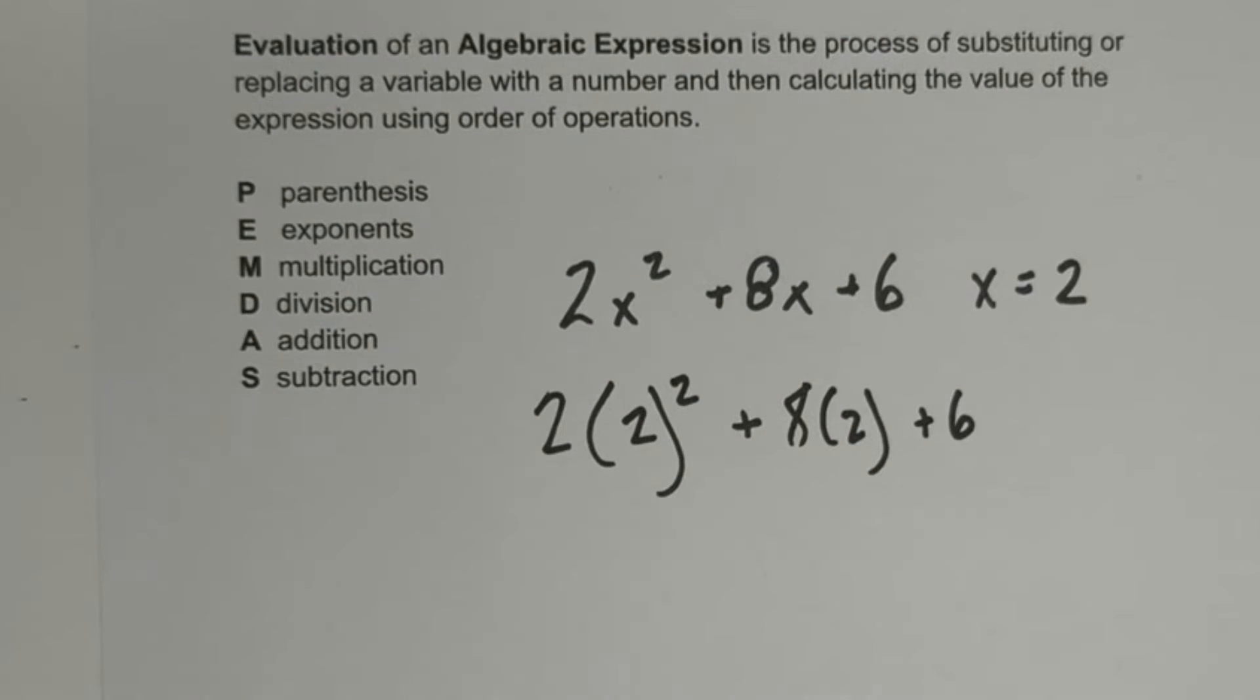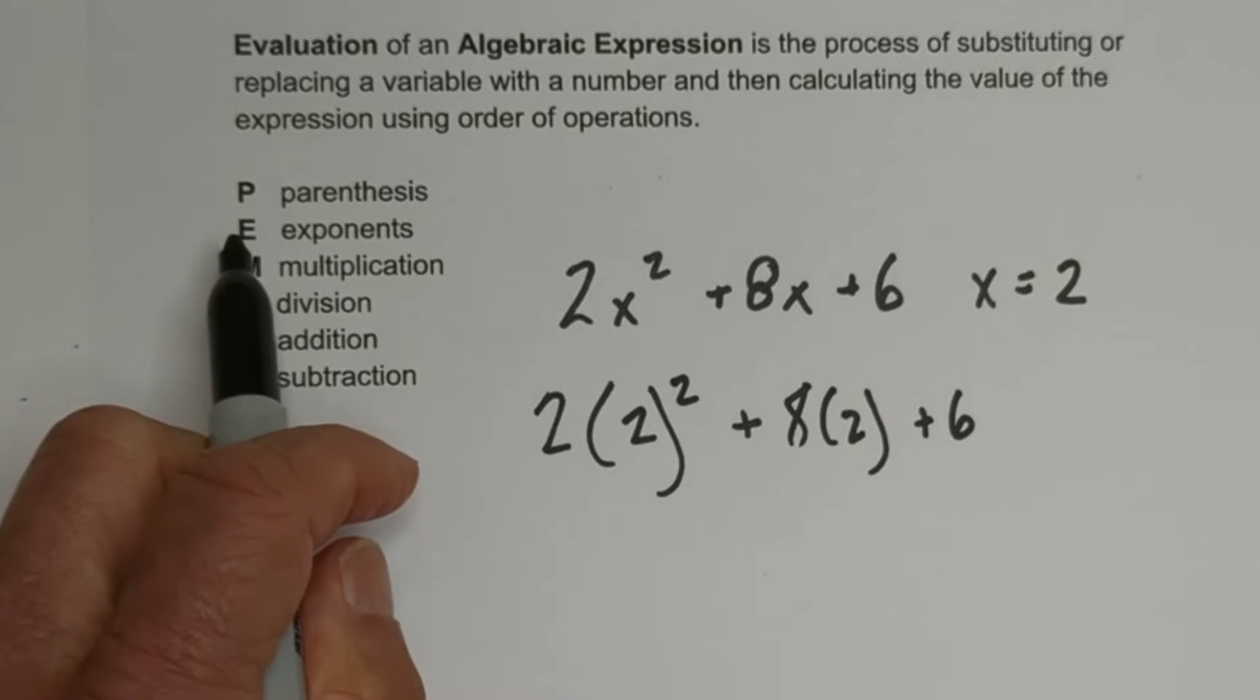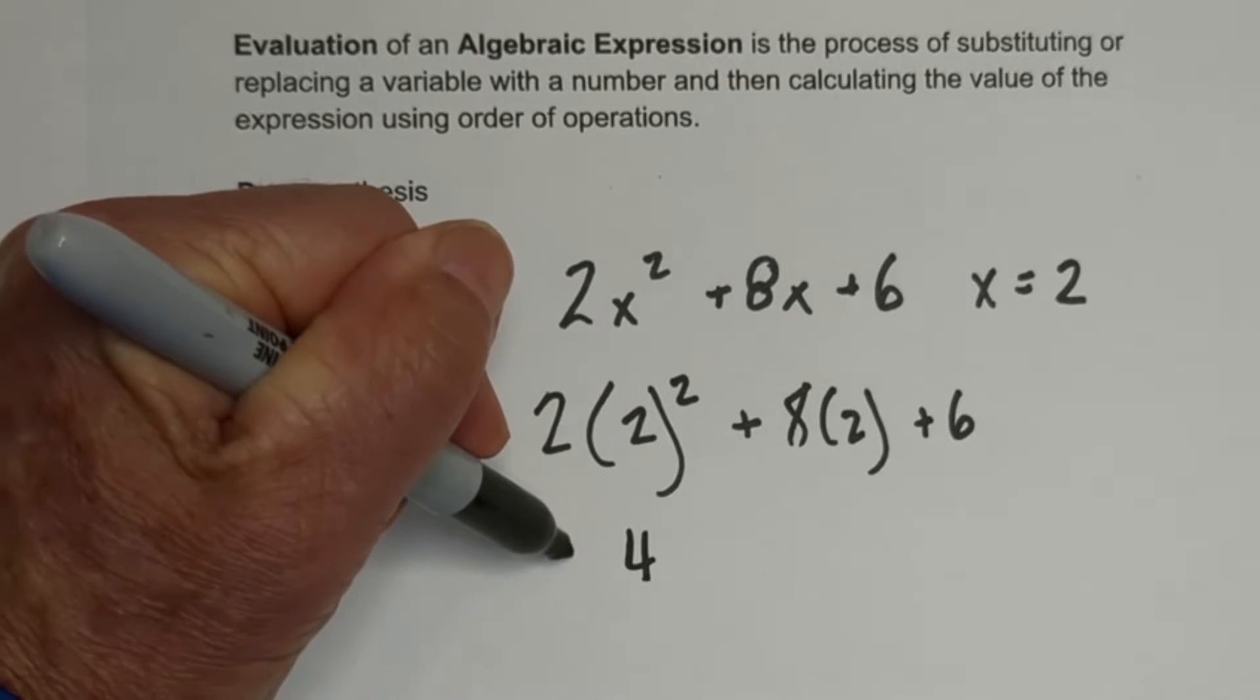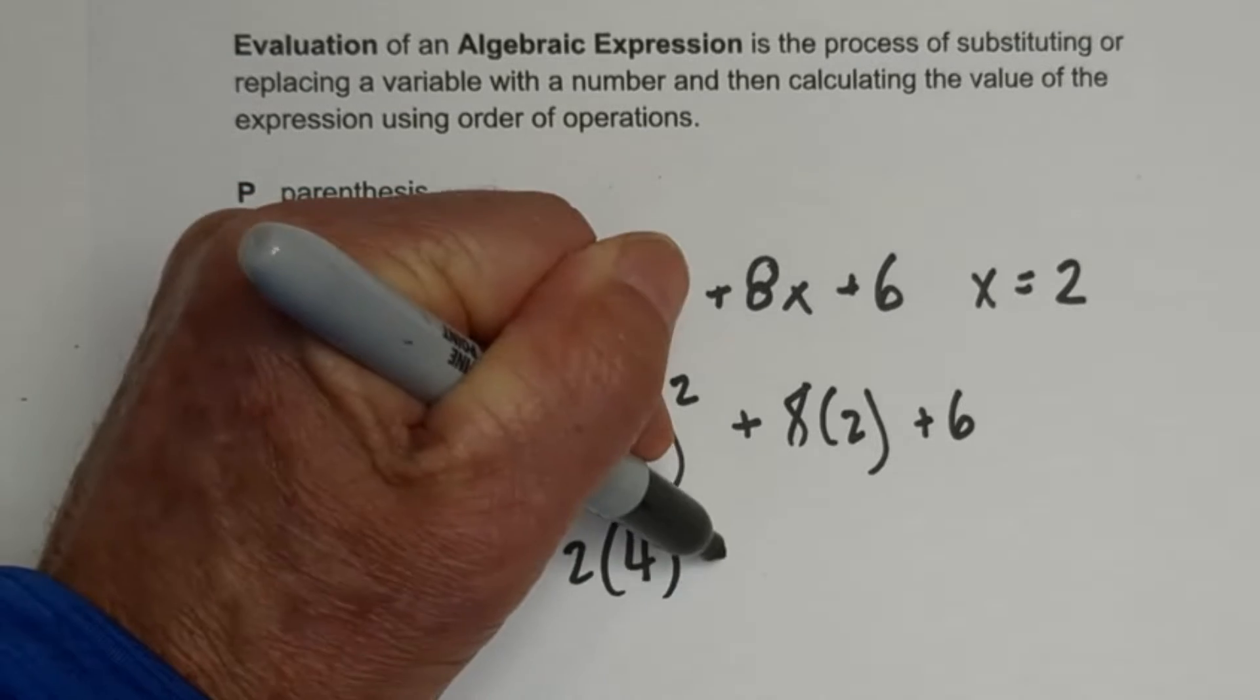And now let's start with the exponents. We have 2 squared is 4, so that'll be 2 times 4.